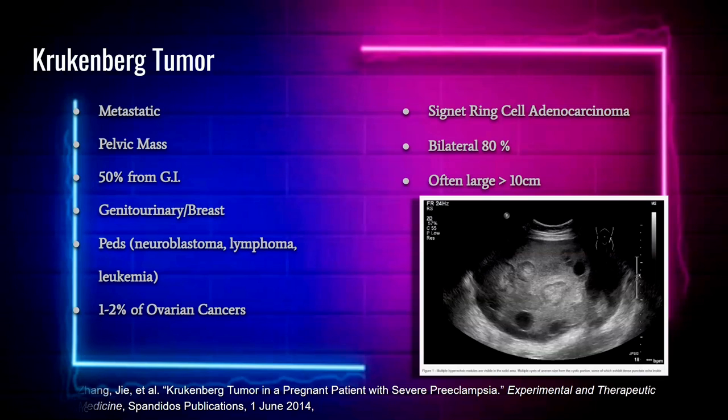The other percentage of tumors come from genitourinary or breast origins. In pediatrics, you can see them arising or metastasizing from neuroblastomas, lymphomas, or leukemia. They account for one to two percent of ovarian cancers.